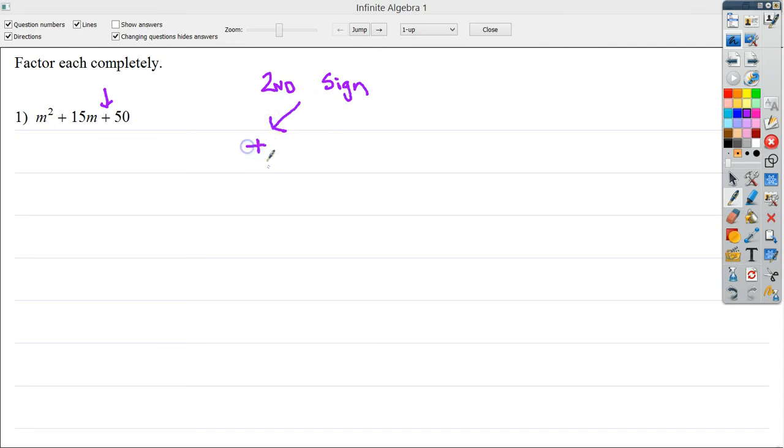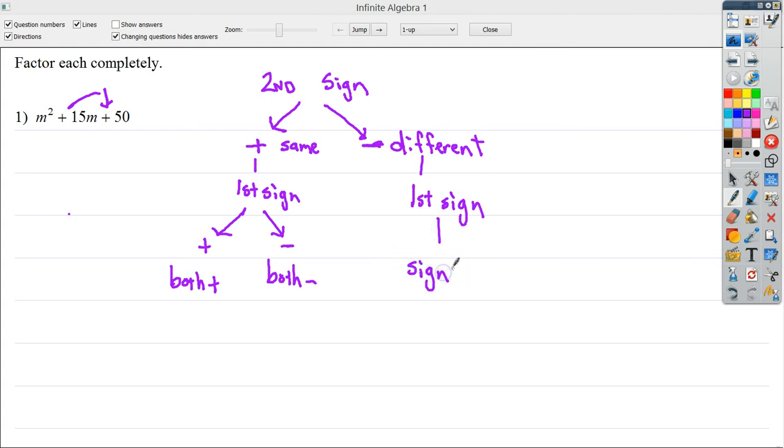If, for instance, it is a plus, I know that that means that my answer signs, my m something number, m something number, are going to be the same. I know that if it is minus, they're going to be different. Now the thing that's useful for me here is if I look at the first sign, so right here, if it is plus, they're both plus in my answer. If they're minus, they're both minus. If they're different, my first sign tells me the sign on the bigger factor.